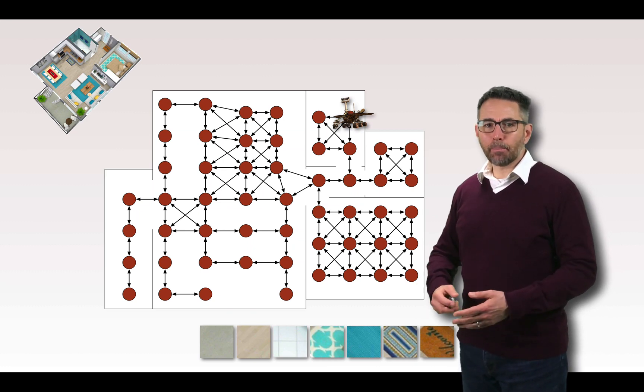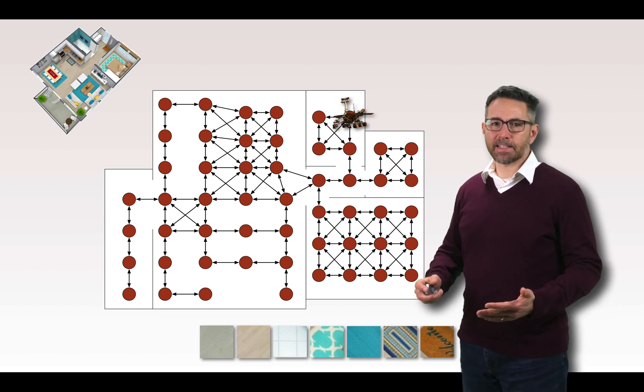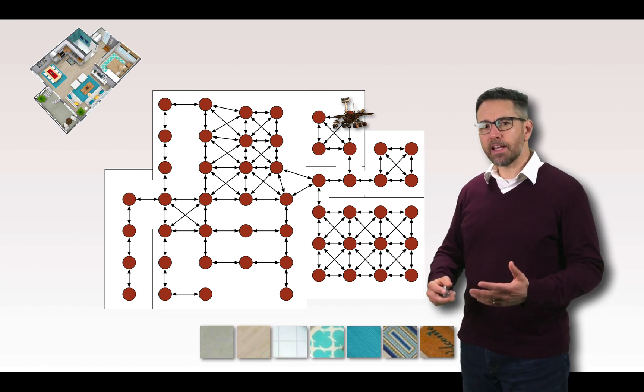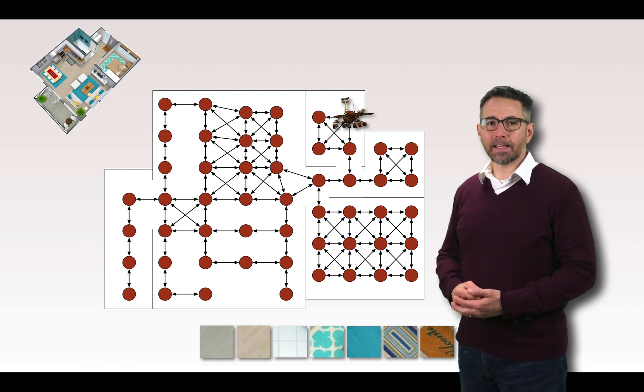That apartment's floor plan is shown in the upper left, and then we represent it as a hidden Markov model with this state transition diagram that you see here. Each one of those red squares is a state that the robot can be in.